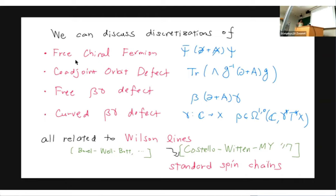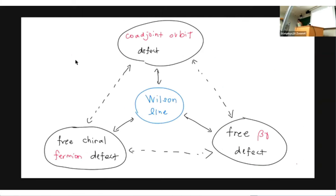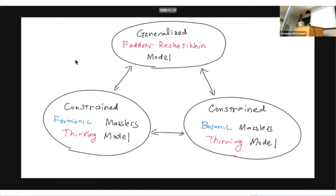As I showed in my previous paper, if you have Wilson lines in the four-dimensional Chern-Simons theory, they generate the standard spin chains described by Yang-Baxter equations and their cousins. So many of these defects just generate standard spin chains. There is a huge redundancy on the quantum field theory side because many different defects turn into the same Wilson line, meaning they are equivalent.